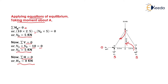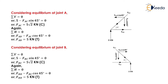Now we need to determine the forces in each member of the truss. To find the forces in each member, we consider each joint separately, starting with joint A. At joint A, two members connect — AC and AD. We assume FAD is directed away from the joint and FAC is directed towards the joint.